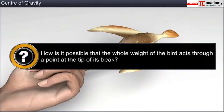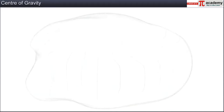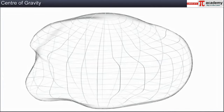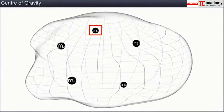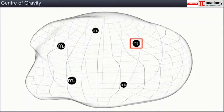Since the bird is in static equilibrium, these two forces must be equal in magnitude, opposite in direction, and must act along the same line. How is it possible that the whole weight of the bird acts through a point at the tip of its beak? Let us try to understand this by taking a rigid body, which can be divided into smaller mass elements of masses m1, m2, and so on up to mn.